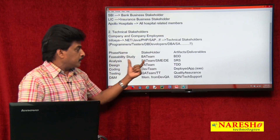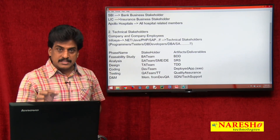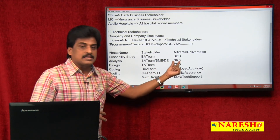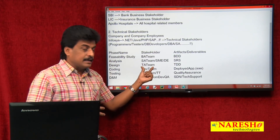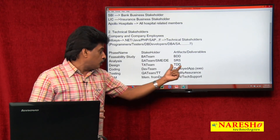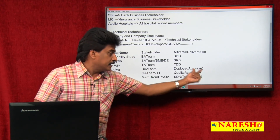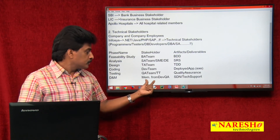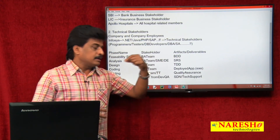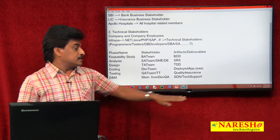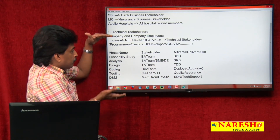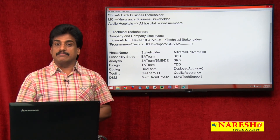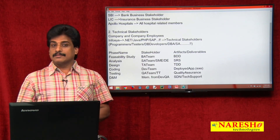Feasibility study involves the business analyst team with artifact BDD (business design document). Analysis involves the system analyst team and subject matter experts (SME), with artifact SRS (system requirement specifications). Designing involves the technical analyst team, with artifact TDD (technical design document). Coding involves the development team, producing the deployed application. Testing involves the testing or QA team for quality assurance. Delivery and maintenance involves members from the development and quality analyst teams, with deliverable being a software delivery note or tech support. This completes the detailed software development life cycle.